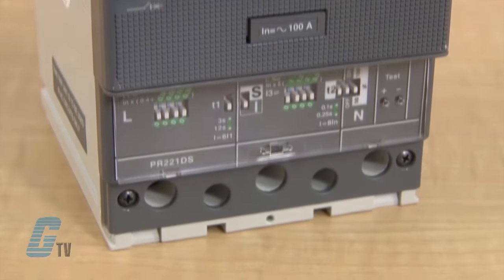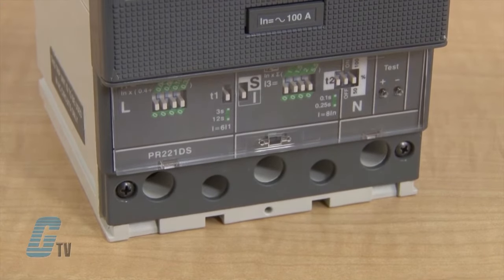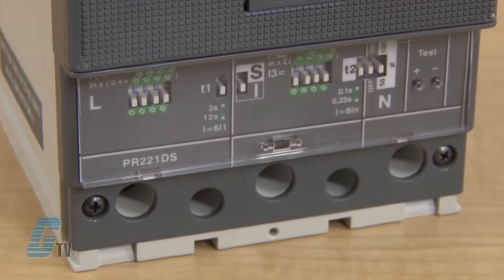On the front of ABB circuit breakers with an electronic trip unit are a group of dip switches. For demonstration purposes...